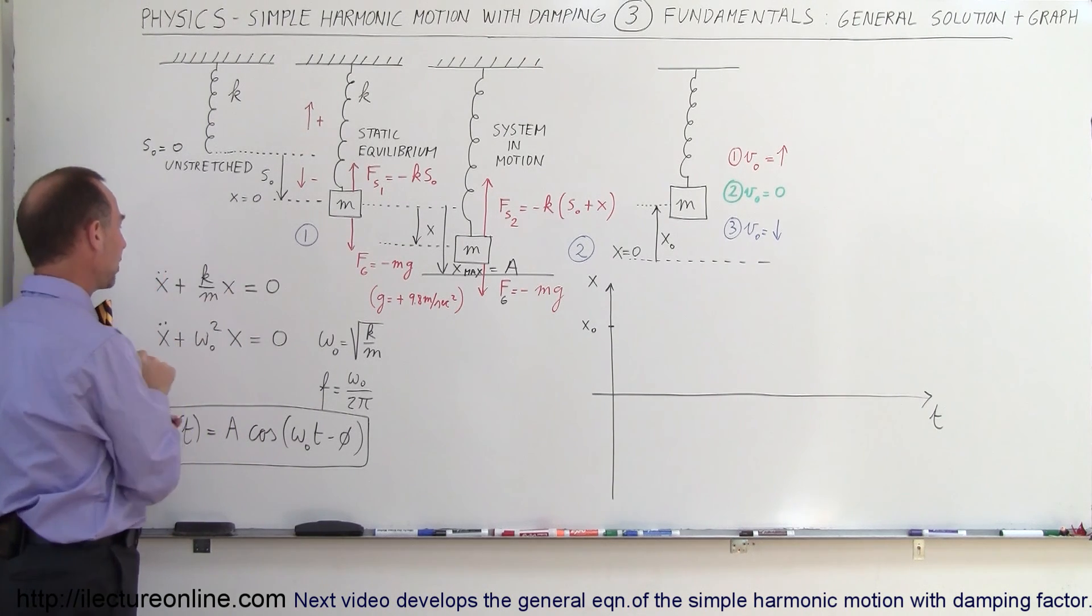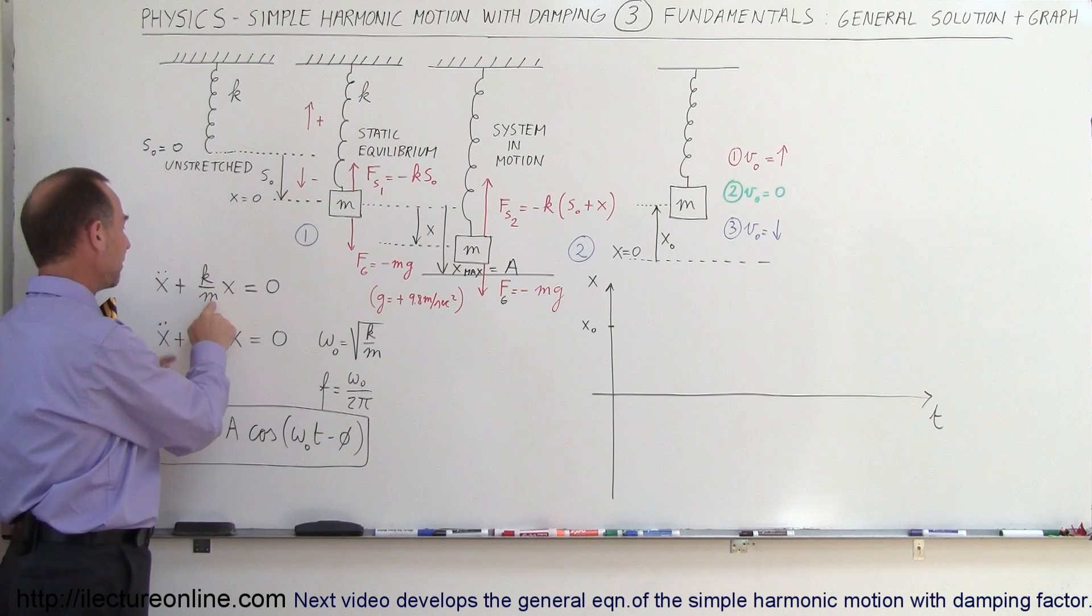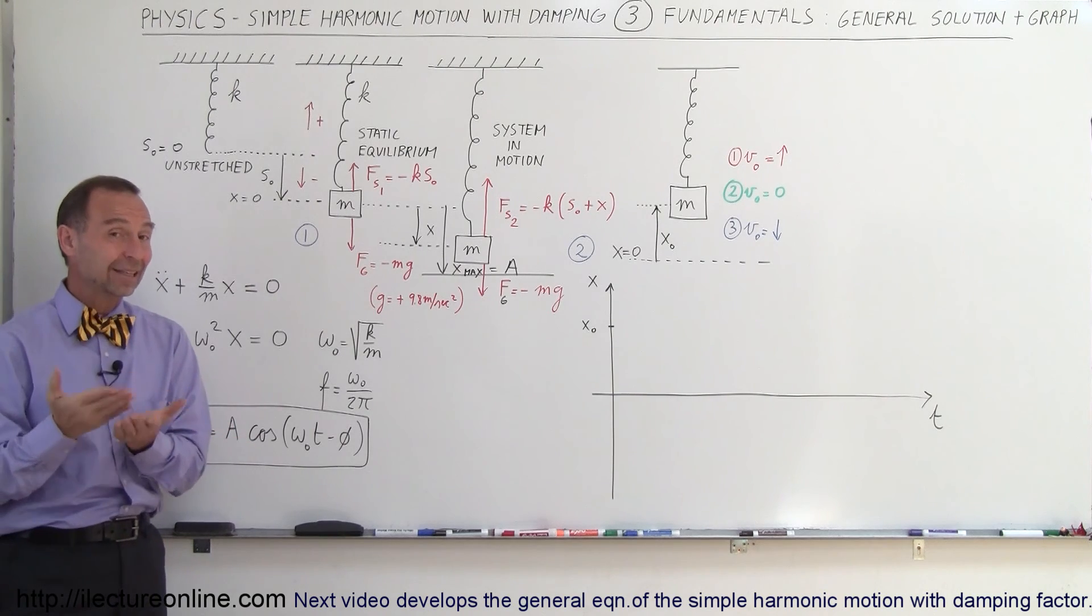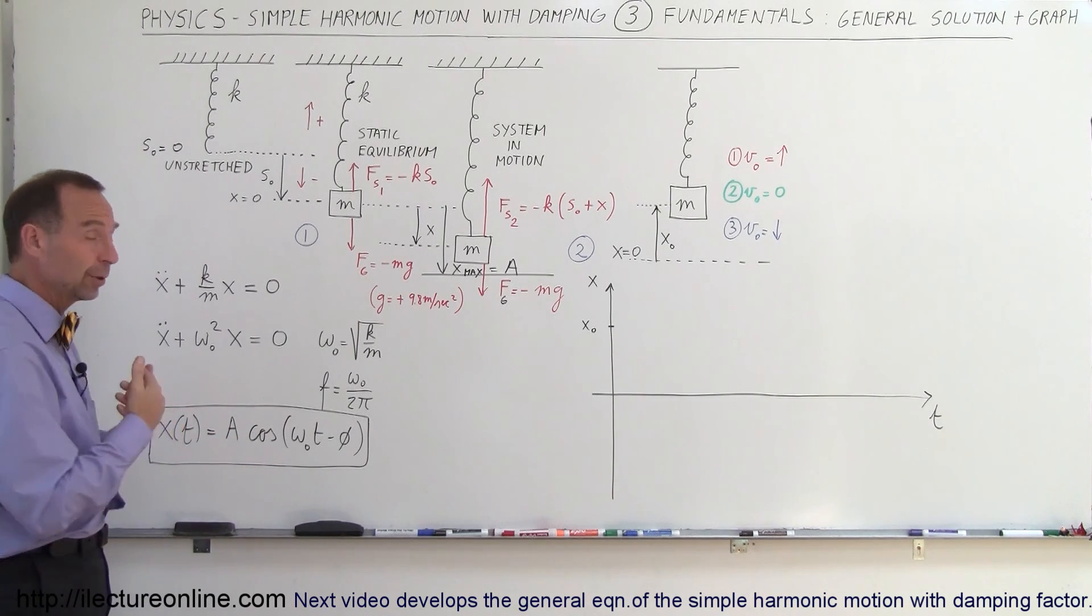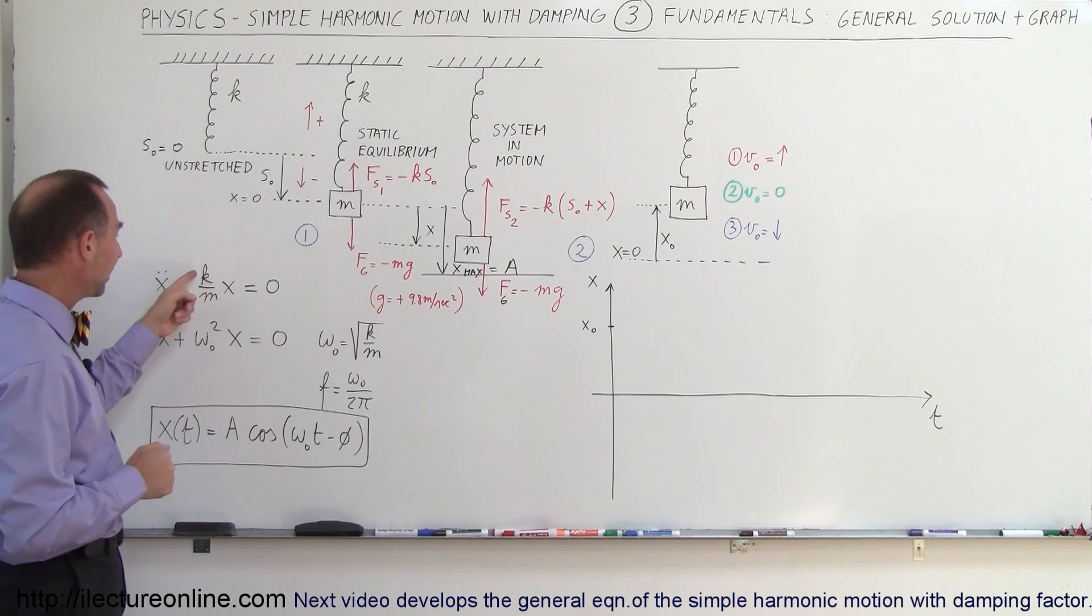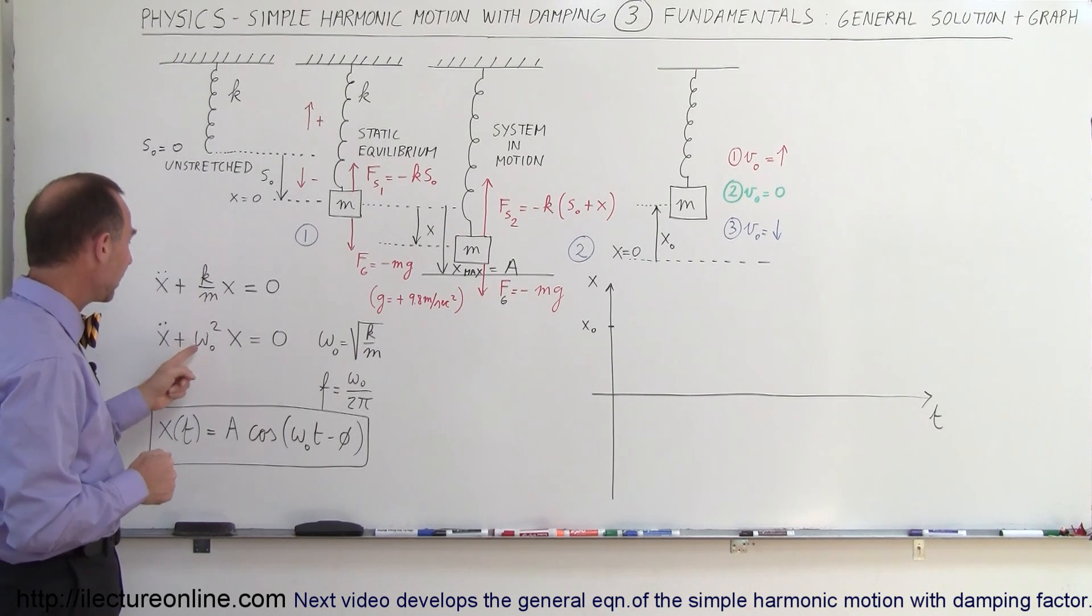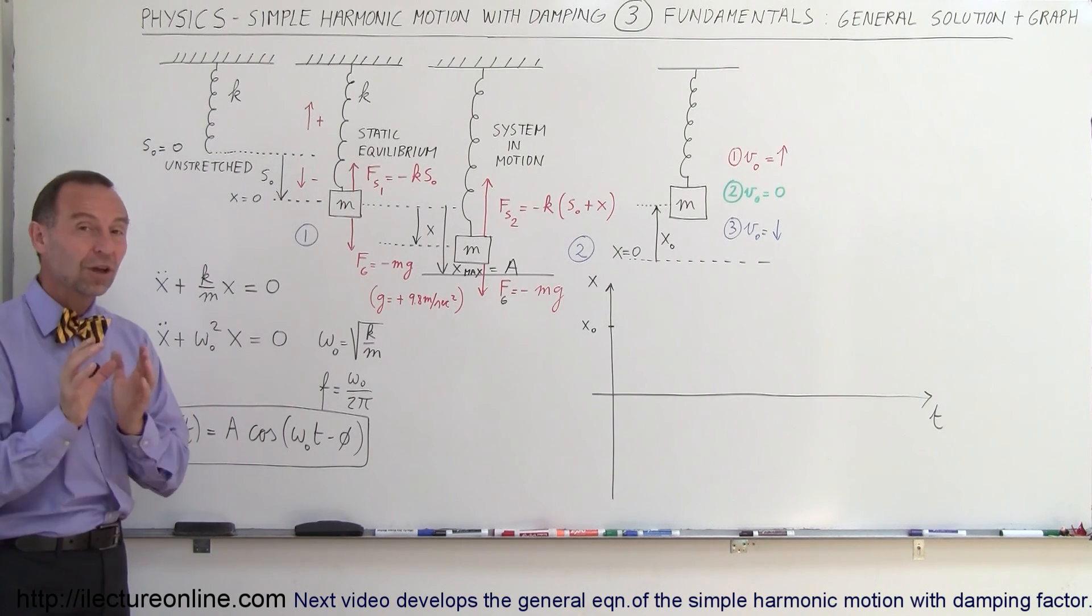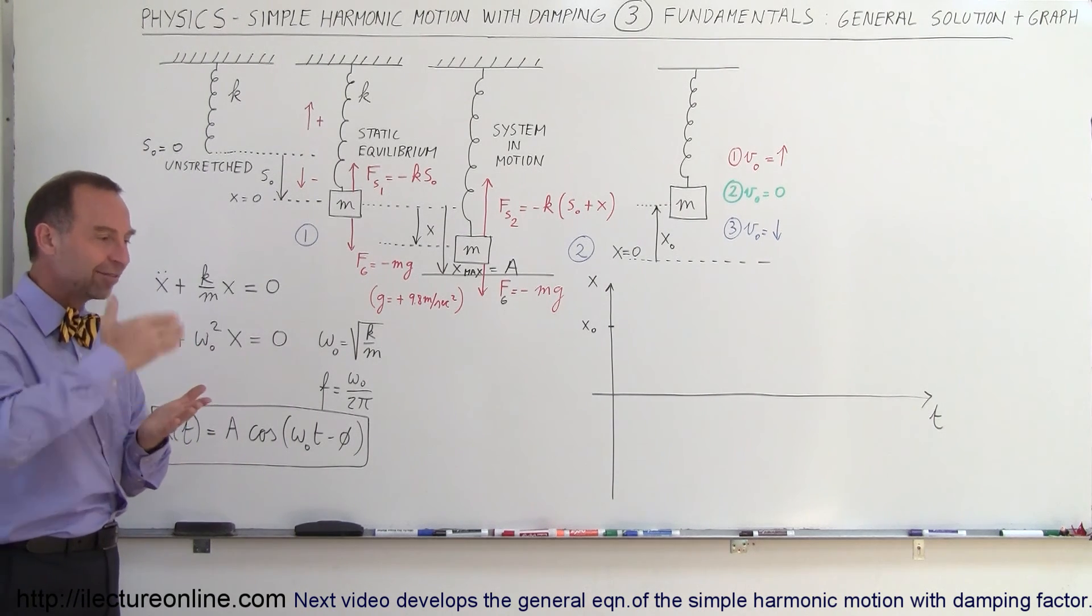Just to remind us, here's our general differential equation where k is the spring constant, m is the mass, x is the position away from the equilibrium point, x double dot simply means the second derivative of x with respect to time, which is the acceleration of the object. Replacing k over m by omega squared,